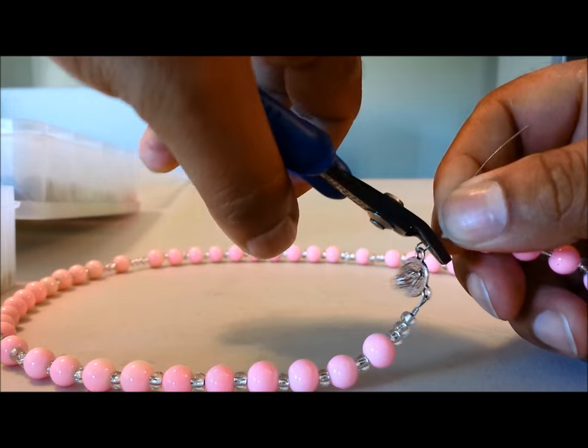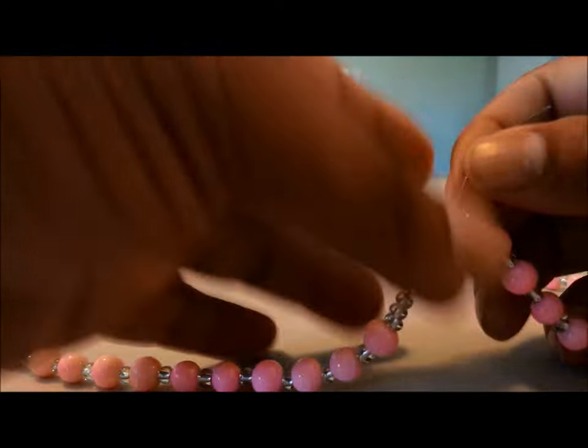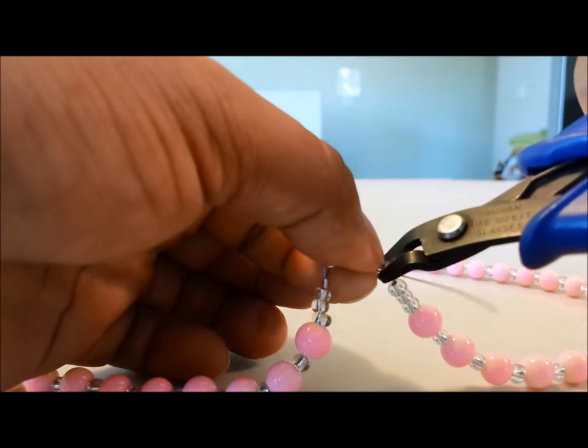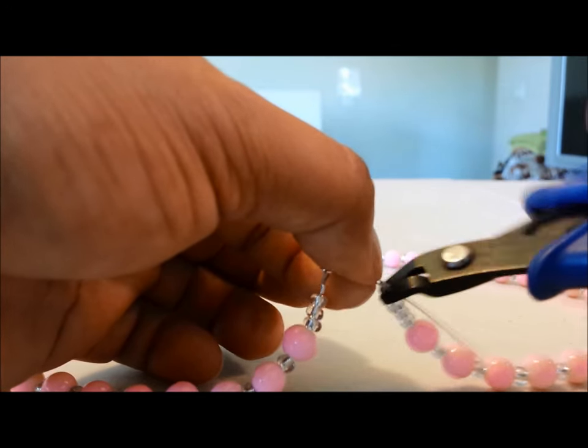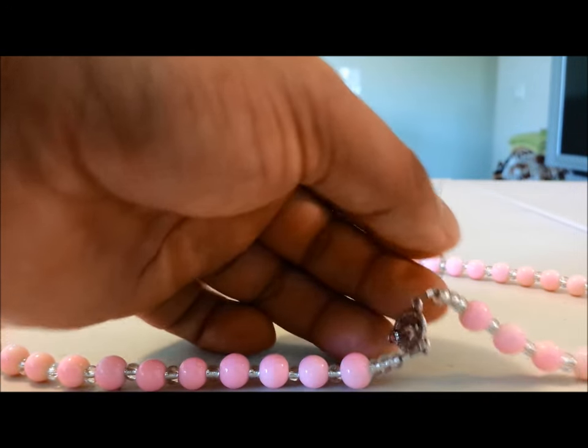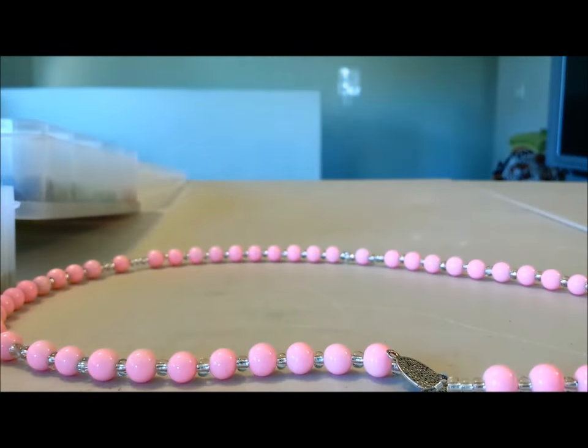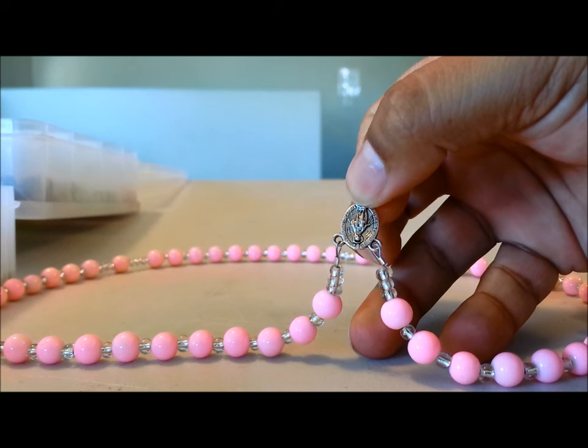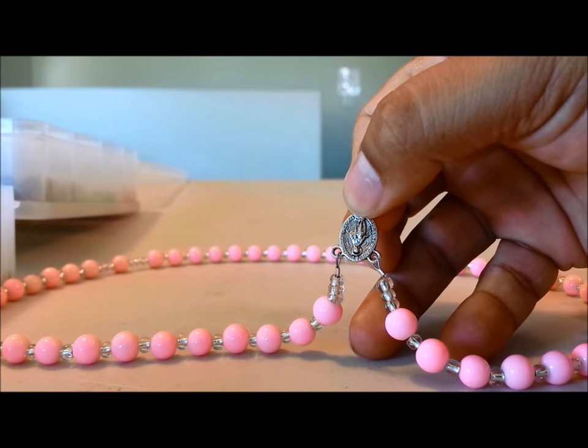Then I'm going to go ahead and crimp that off. I'm going to crimp that in place. Okay. And then I'm going to set it. And we're all set. Got a little bit of play. And then I'm going to cut the excess wire off all the way down. And we're almost through with the rosary. Now for the crucifix strand.